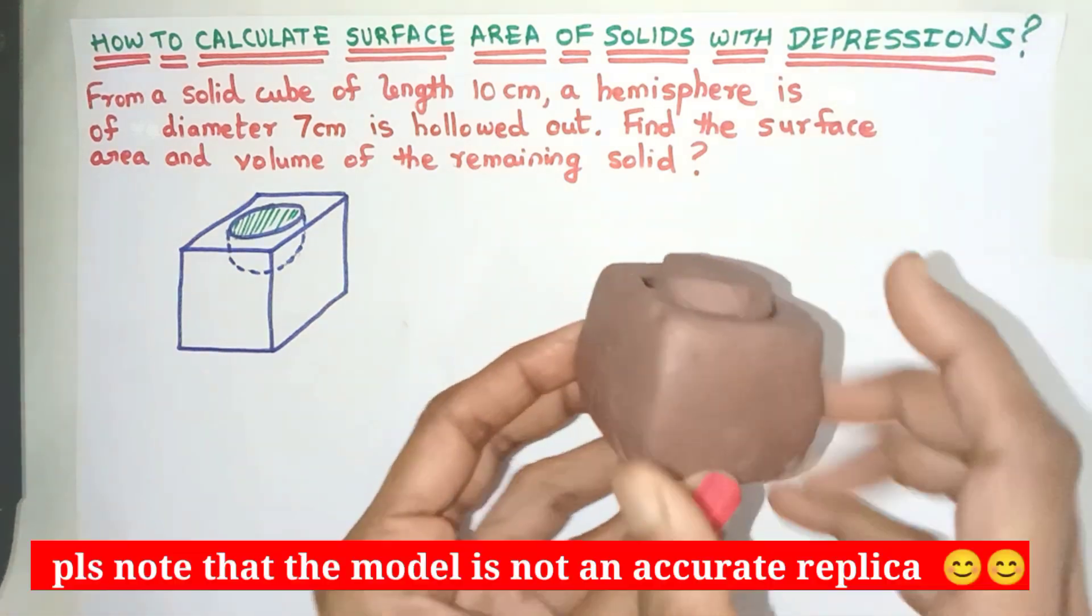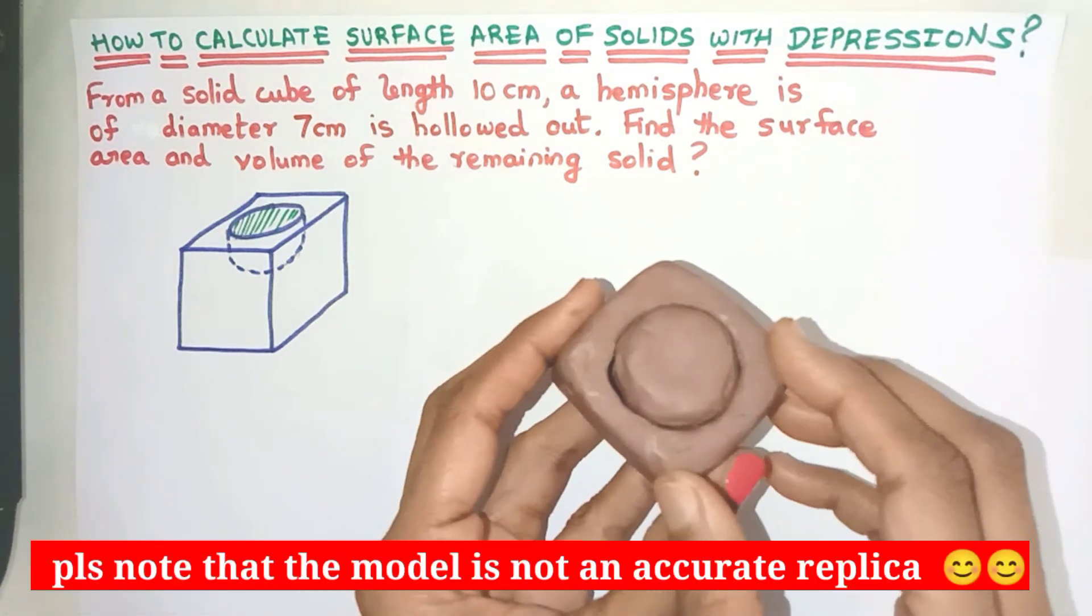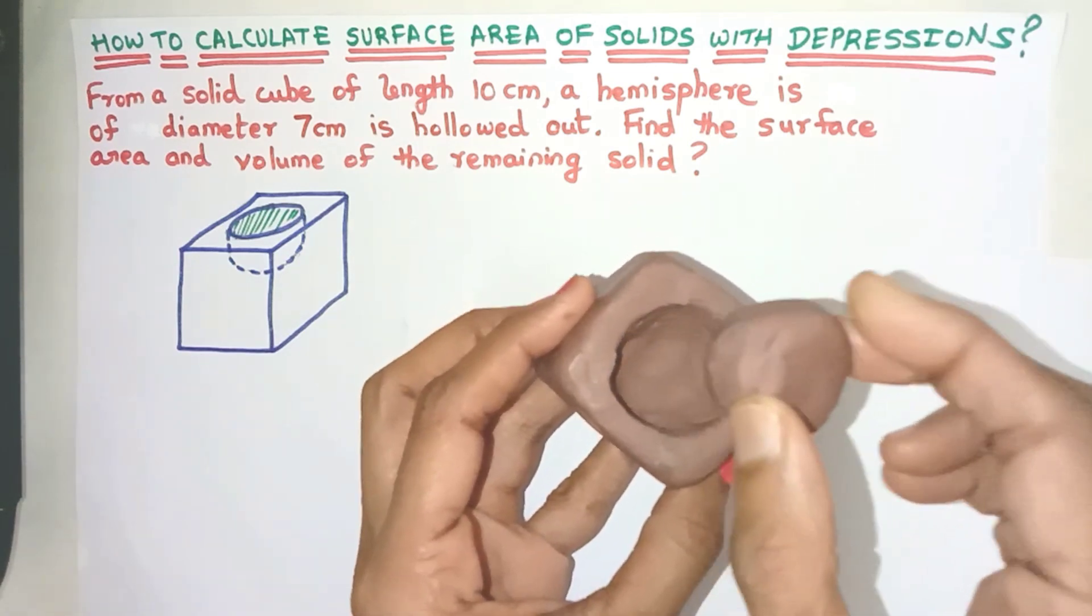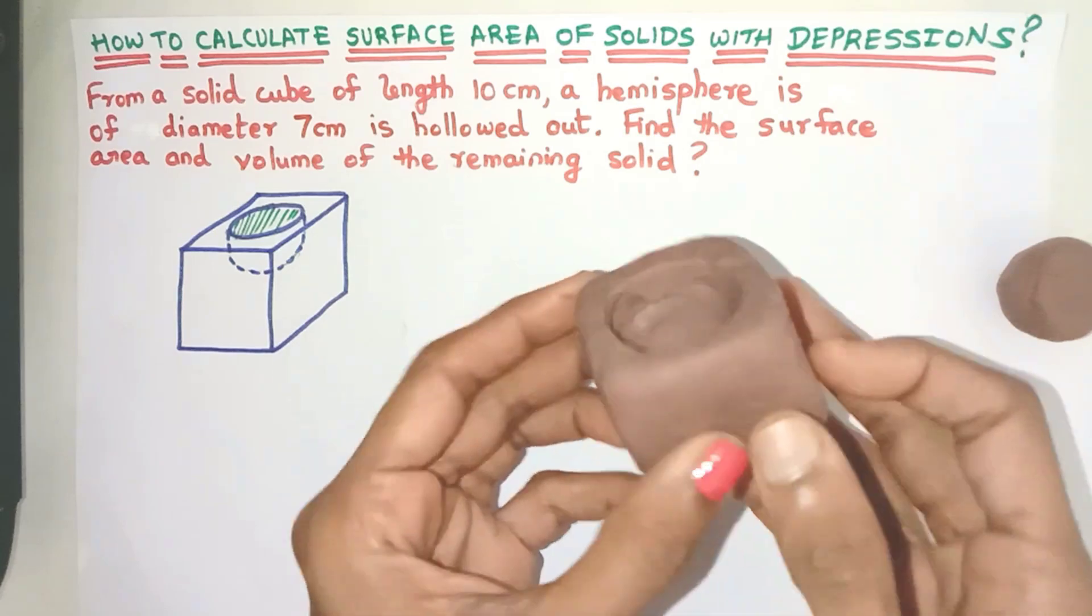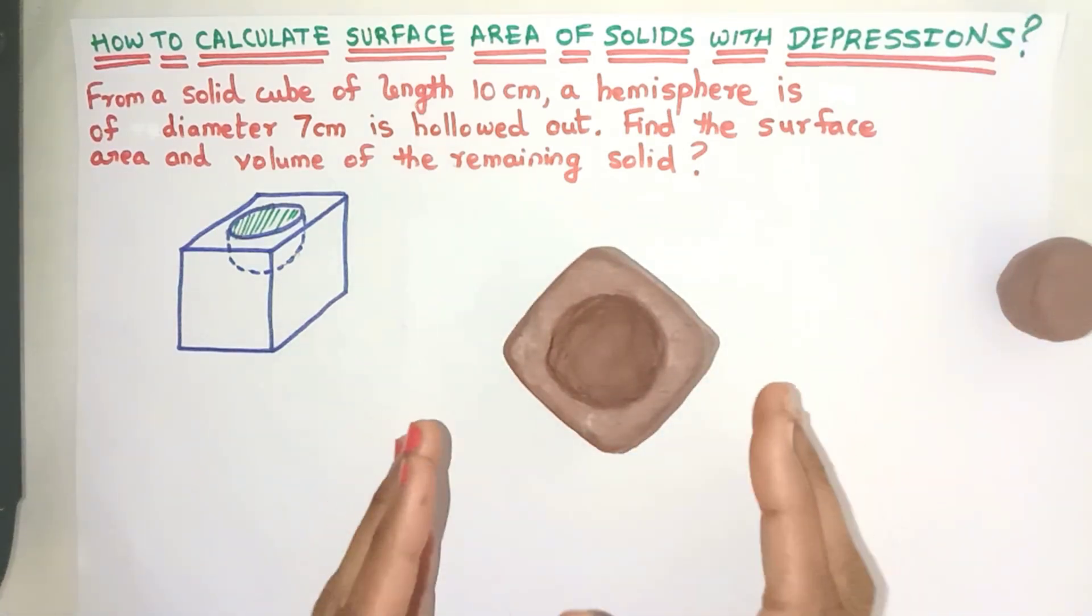In this example we have a cube of length 10 centimeters. From here a hemisphere of diameter 7 centimeters is removed or scooped out. We have to find the surface area and volume of the remaining solid.